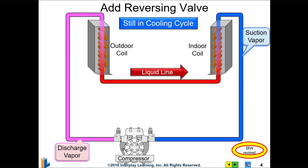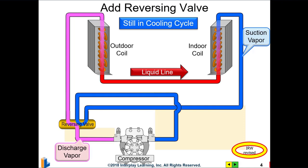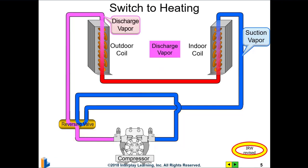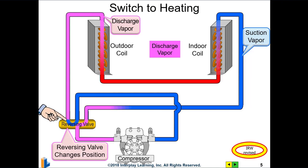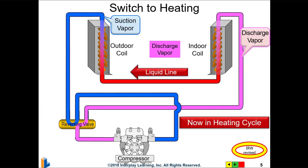If you add a component called a reversing valve, it has the ability to take that discharge gas coming out of the compressor and reroute it — it can send it to the indoor coil. In cooling mode, the discharge gas goes to the outdoor coil, but when we go to heating mode, that valve changes position and the discharge gas gets routed to the indoor coil. The indoor coil is now acting as our condenser, rejecting heat into the space, while heat is absorbed through the outdoor coil from the outdoor air. It's a common liquid line, just flowing in reverse direction in each case.